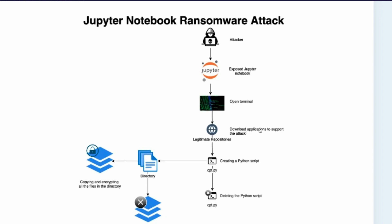The attacker takes control of the exposed Jupyter Notebook, opens the terminal of the machine or server using Jupyter Notebook, then starts downloading applications or libraries to support the attack. Finally, they create a Python script that encrypts everything on the machine, then deletes all the unencrypted files. The only way to unlock those files is to pay a ransom.